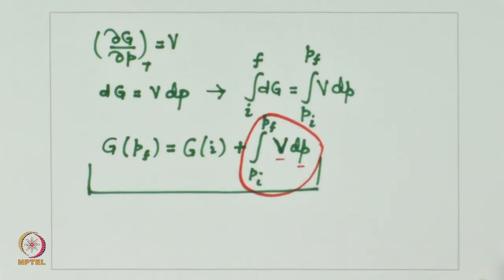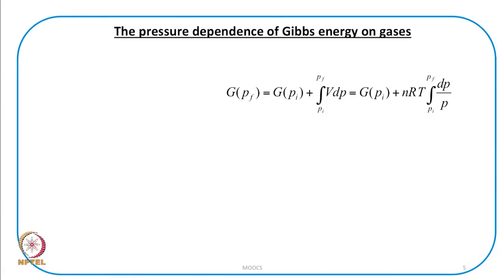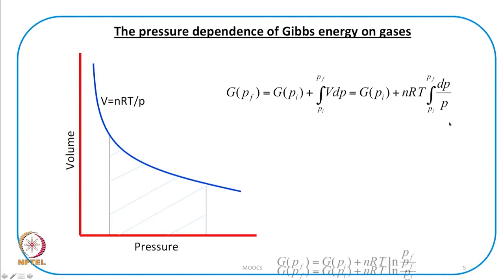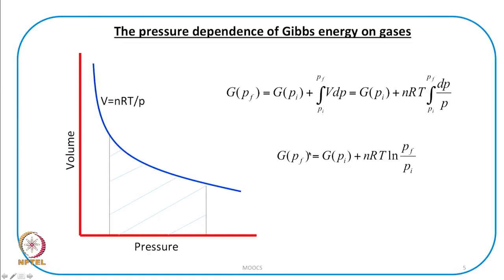For an ideal gas, substituting V = nRT/P, the integral is solved to give G_m(final) = G_m(initial) + RT ln(P_f/P_i), where n = 1 for molar properties. Alternatively, one can plot V against P — for an ideal gas this gives a hyperbola — and the area under the curve from P_i to P_f gives the pressure dependence of Gibbs free energy.